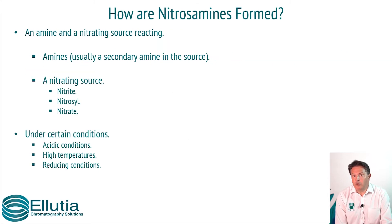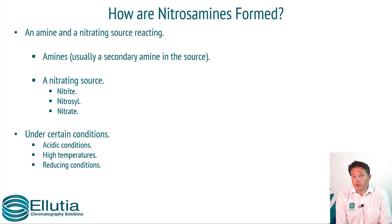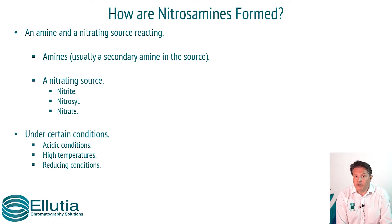So, how are nitrosamines formed? An amine reacts with a nitrating source. The amine is typically a secondary amine. The nitrating source can be a nitrite, a nitrosyl, or a nitrate. Certain conditions, such as acidic conditions or elevated temperatures, have been found to increase the rate of nitrosamine formation.